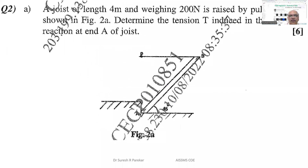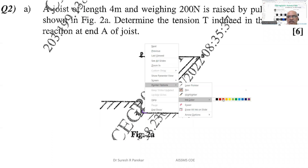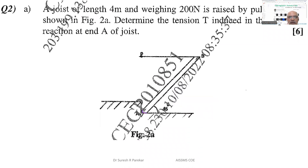Next, we have a joist of length 4 meters. Drawing this, we have a support at A — it is not fixed, so we have two reactions: one vertical V_A and one horizontal H_A. The joist is 4 meters long. At 2 meters, the weight acts — 200 Newtons. At the other end we have a cable with force P.